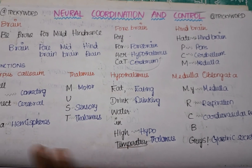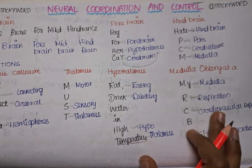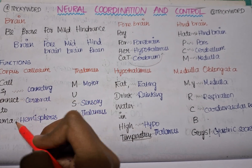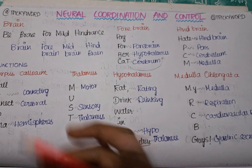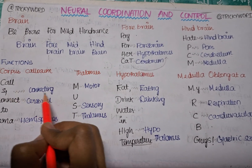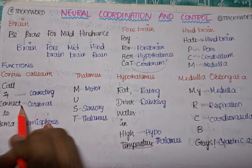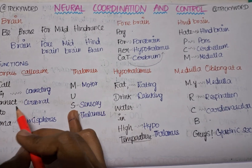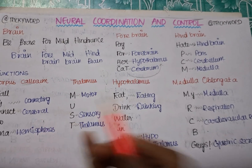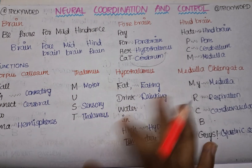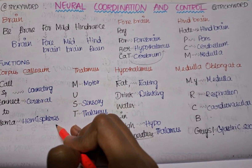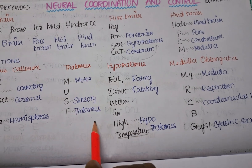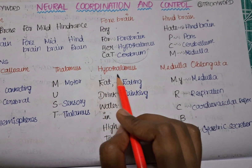Now for the functions of brain parts. For corpus callosum, the trick is 'Call and connect to Hema' — call connects easily to the word callosum, and Hema means hemisphere. So the corpus callosum connects the two cerebral hemispheres. For thalamus, the trick is MUST — M for motor, S for sensory, T for thalamus — so the thalamus deals with motor and sensory areas.